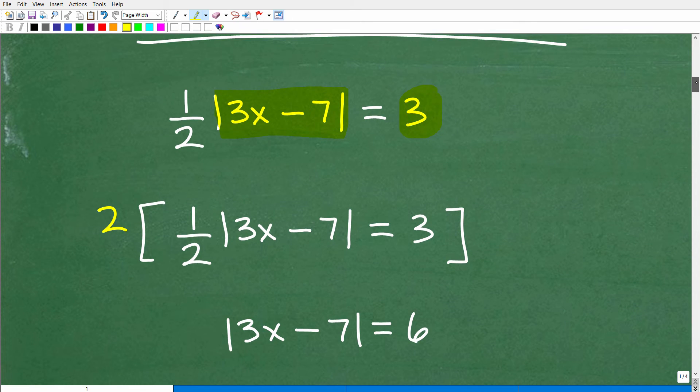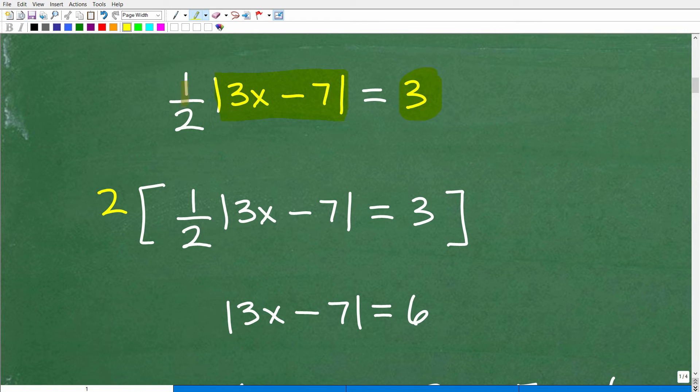Okay, so now to get this absolute value part all by itself, I got one-half times this absolute value function equal to 3. So I can go ahead and multiply both sides of the equation by 2. And one way you can write that is just putting brackets around the entire thing. So this is going to be 2.